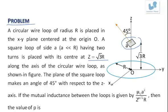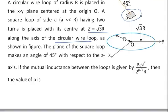The plane of the square loop makes an angle of 45 degrees with respect to the Z axis, which implies that the normal to the plane of the loop is also at an angle of 45 degrees with the Z axis.